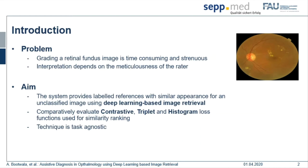We propose a system that retrieves labelled images with similar appearance every time it is presented with an unclassified image, using deep learning. We also compare the performance of different objective functions like contrastive, histogram, and triplet loss.